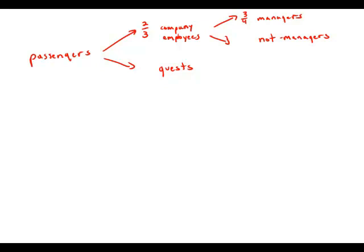So if three-quarters of the company employees were managers, one-quarter of them are not managers. So one-quarter of two-thirds, that would be one-sixth of all passengers, fall into this special category of non-manager employees.